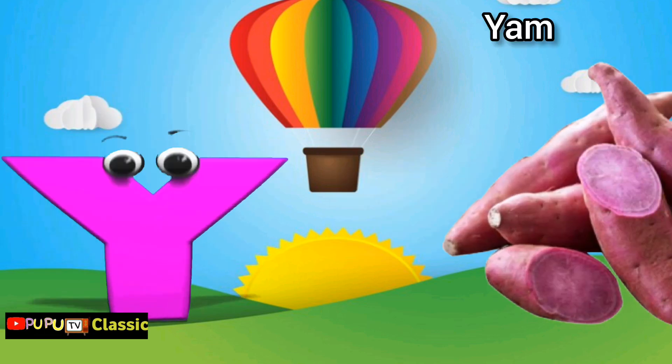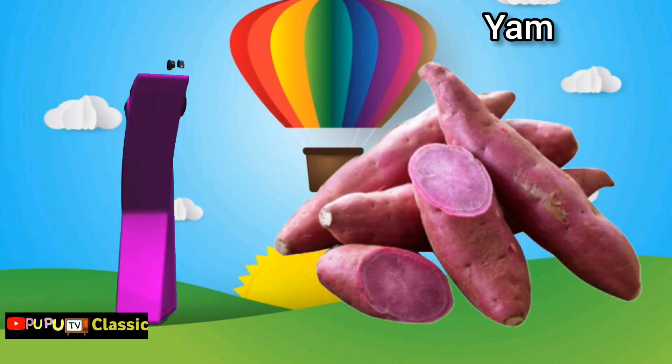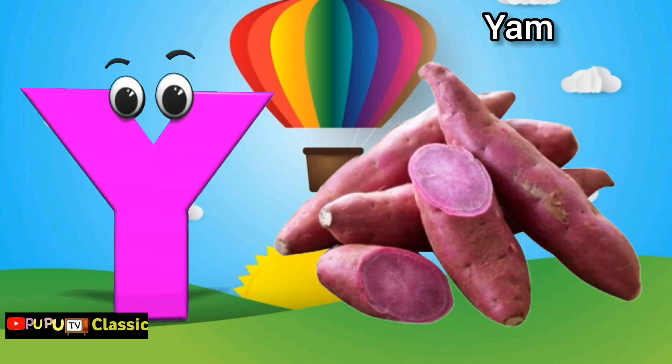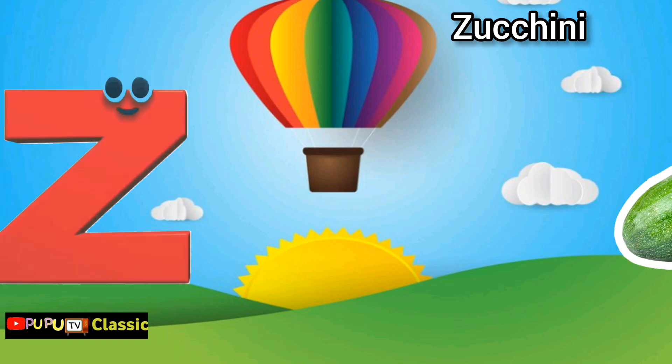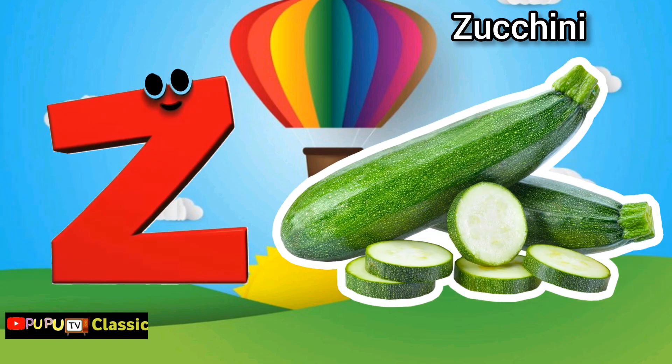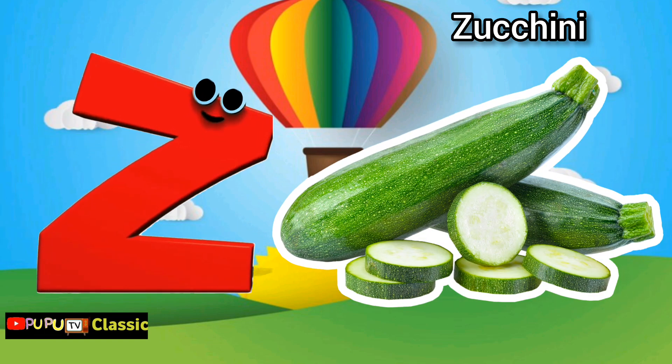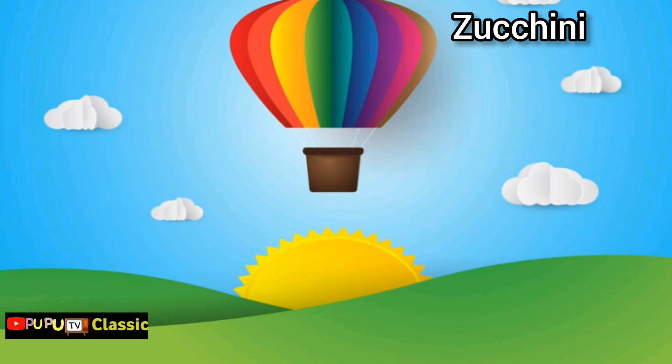Y is for yam, y y y yam. Z is for zucchini, z z zucchini.